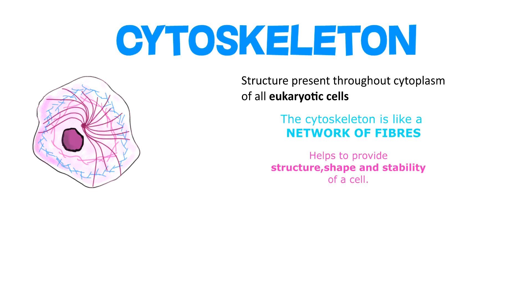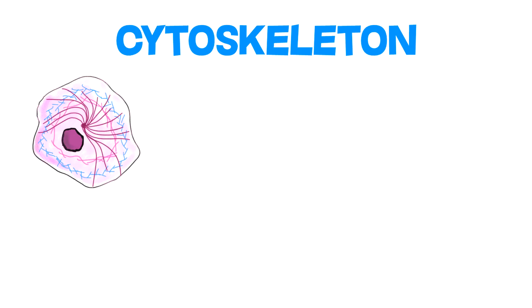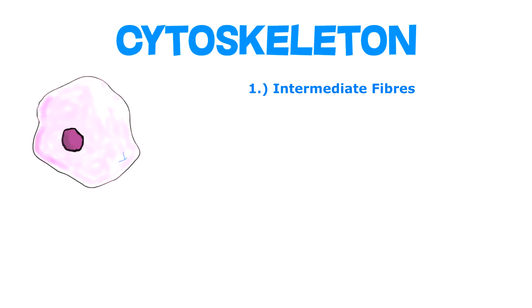There are three components of the cytoskeleton. We first have intermediate fibers, which give mechanical strength to cells.